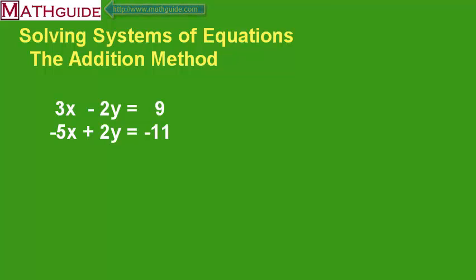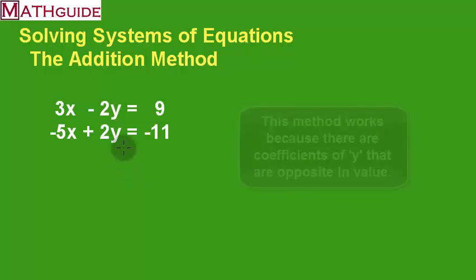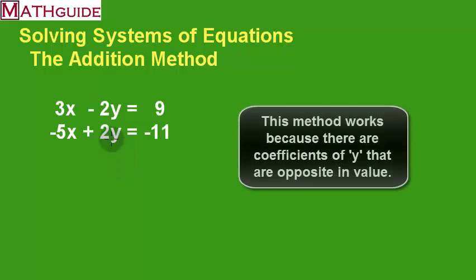We're going to use a special technique called the addition method. This method is going to be used in this particular system of equations because there are coefficients here that are opposite for the y value. In other words, the y has a negative 2 here and a positive 2 here, and if you add those two, you'll see that the y will cancel.